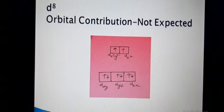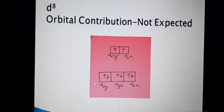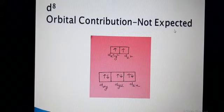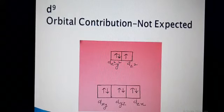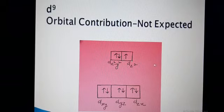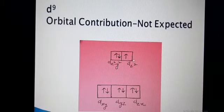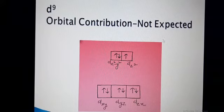For D8, the next electron goes to the T2G level, which becomes fully filled. So the orbital contribution is not expected for D8. For D9, the next electron goes to the EG level and cannot be interconverted due to differences in shape. The second condition is not satisfied, so orbital contribution is not expected for D9.